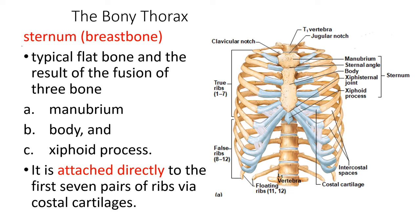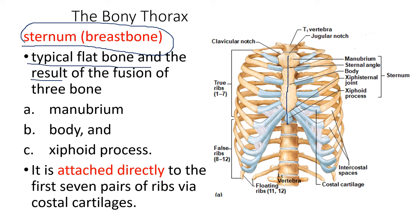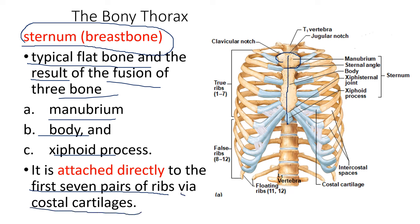The sternum is a flat bone at the center of the chest, the result of fusion of three bones: the manubrium, the body, and the xiphoid process. It is attached directly to the first seven pairs of ribs — the true ribs — via costal cartilages. The sternum is very important in health assessment and serves as a reference for assessing the chest area. When assessing the location of the heart valves, the point of reference is the sternum.